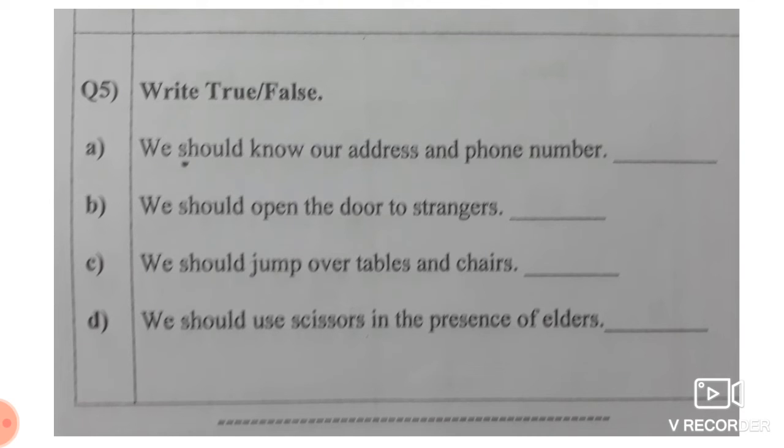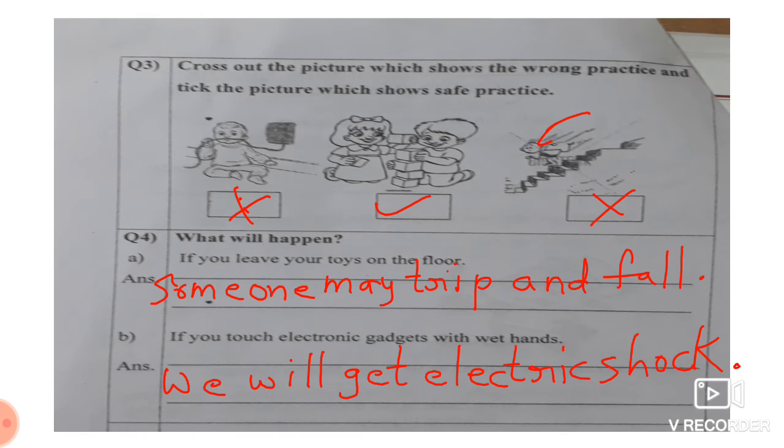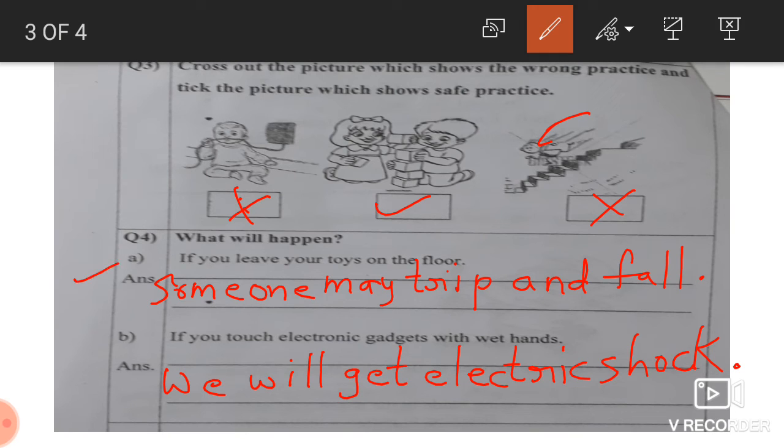So this is the next question. You want me to say it again, that one? Yes. What will happen? The first one, give reason. I'll repeat. If you leave your toys on the floor, someone may trip and fall. If you touch electrical gadgets with wet hands, we will get electric shock, beta.